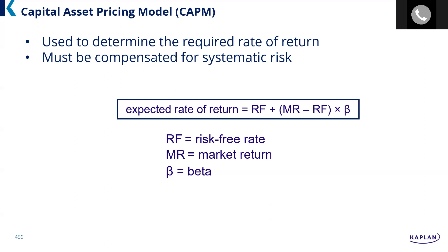This should look familiar. Beta is a measurement of a security's volatility as compared to the market, and we should be compensated for the volatility we're willing to undertake. Whether we have a risk tolerance for high beta or low beta, understand that if we're not willing to accept that risk, we're going to get a lower return. The risk-free rate of return is the idea that we can make money without hazarding our capital.